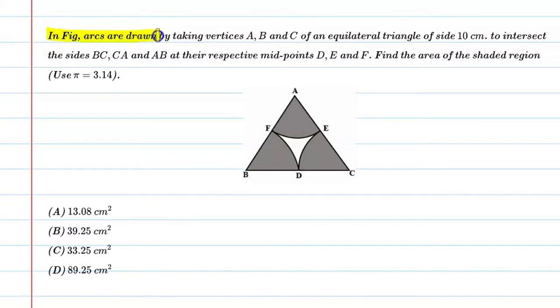In the figure, arcs are drawn by taking vertices A, B, and C of an equilateral triangle of side 10 cm to intersect the sides BC, CA, and AB at their respective midpoints D, E, and F. Find the area of the shaded region. Use pi equal to 3.14.